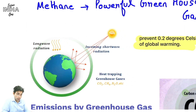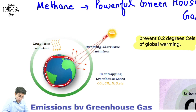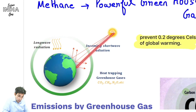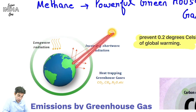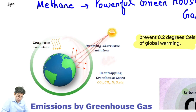Ab greenhouse gases kya hoti hain - sun se aati hai solar radiation, yeh solar radiation aati hai hamare planet Earth mein aur isi se life possible hota hai. Incoming short wave radiation hoti hai toh hamare atmosphere mein greenhouse gases hain - like CO2, CH4 (methane), N2O, etc.